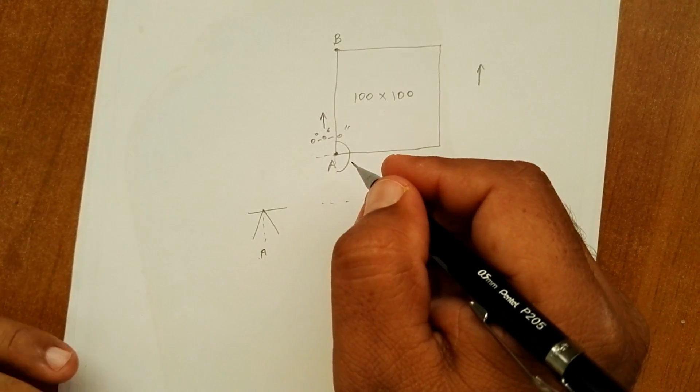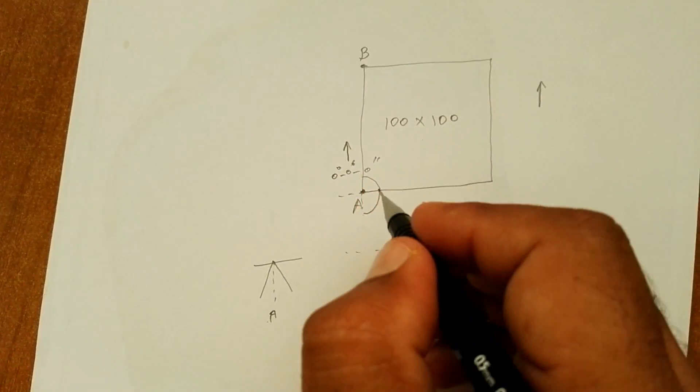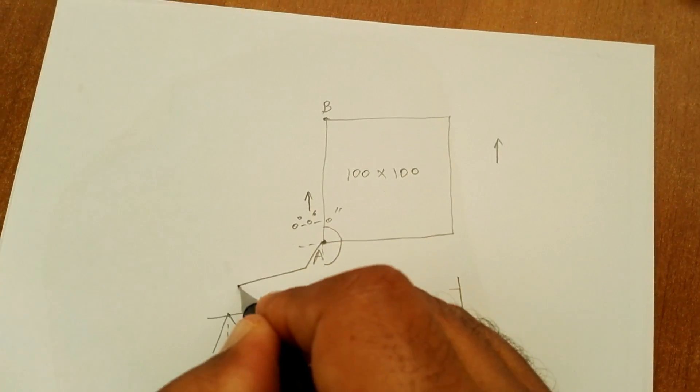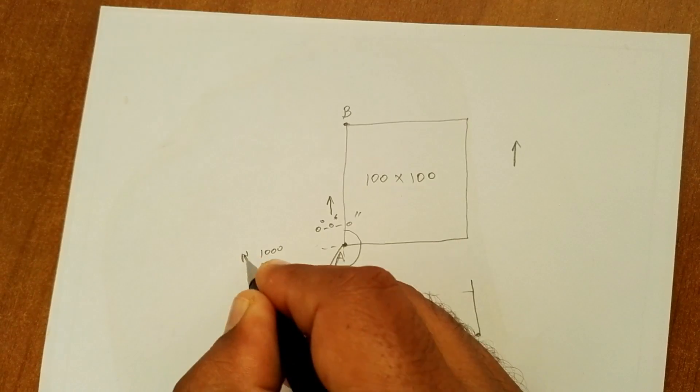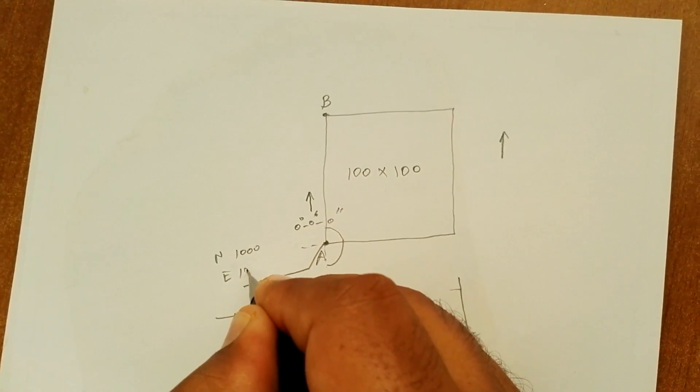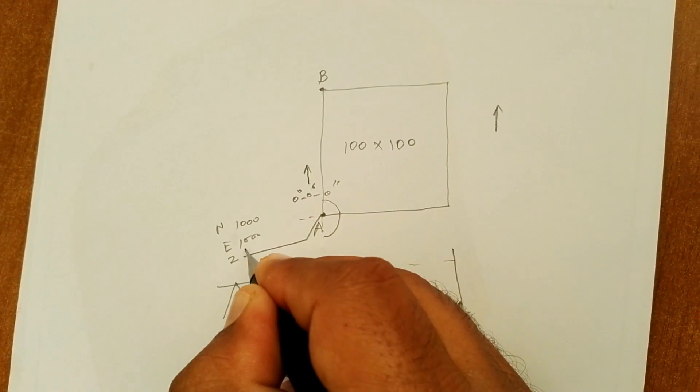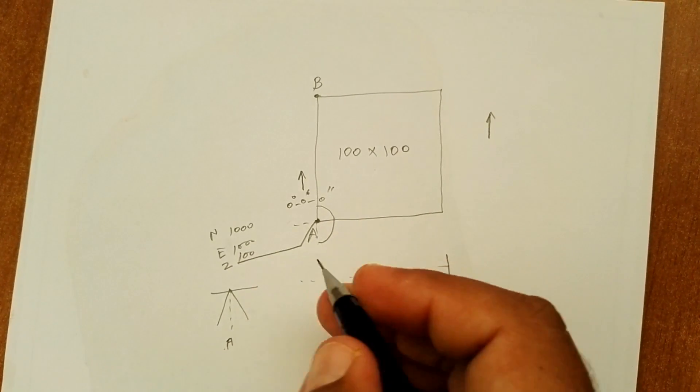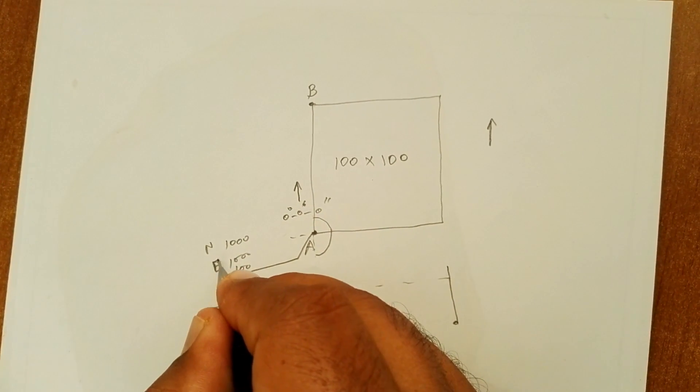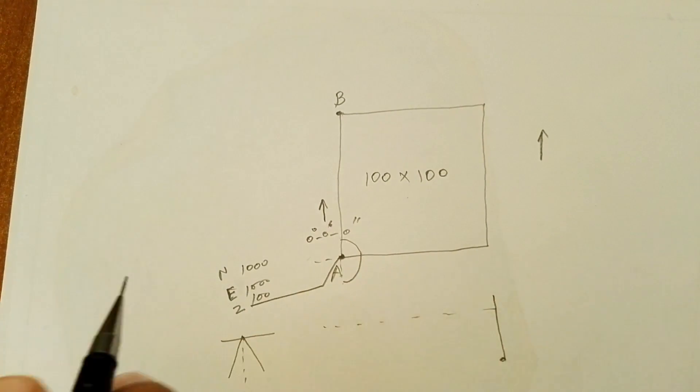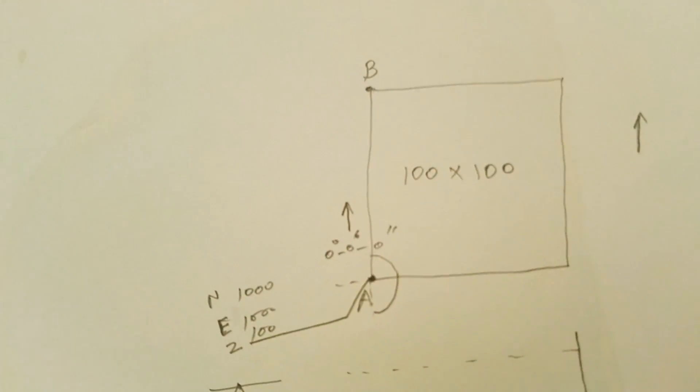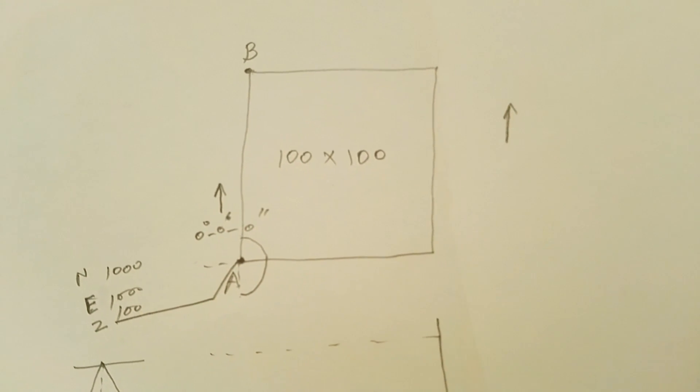And then I have 90, 180, 270, and then 360. So what I will do in this case? I will assume some coordinate. For example, in this corner I will assume one thousand in north, in east also one thousand, and for the Z I assume 100.